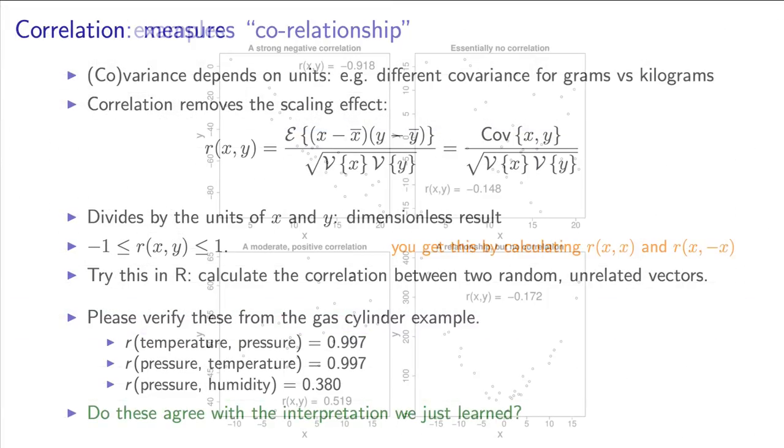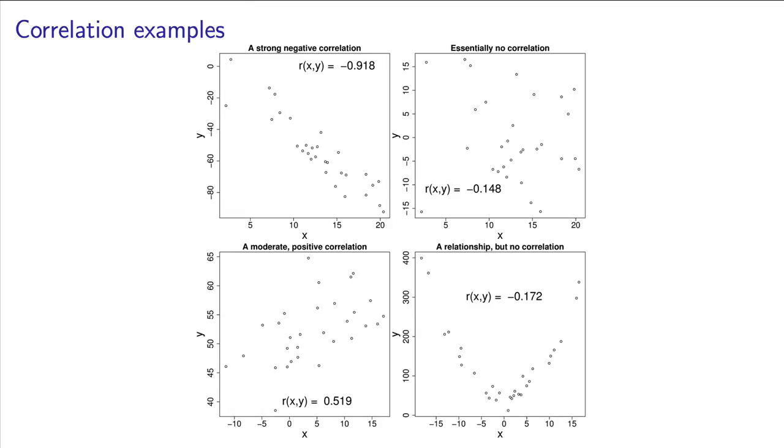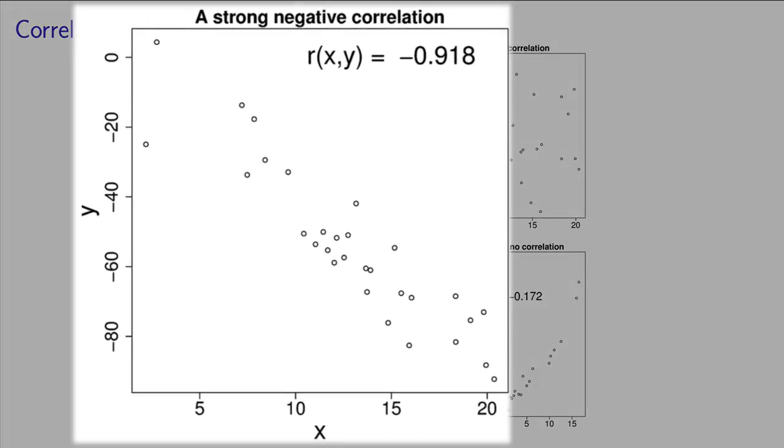Let's take a look at a few visual examples to start guiding our sense of the correlation's magnitude. Here we see a variable of x plotted against y, and there's a strong negative relationship between them. As x increases, we expect y to decrease. If we calculated the correlation between these two numbers of x and y, we would obtain a value of negative 0.9 in this example.